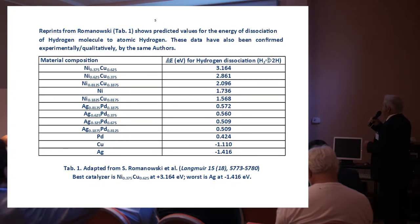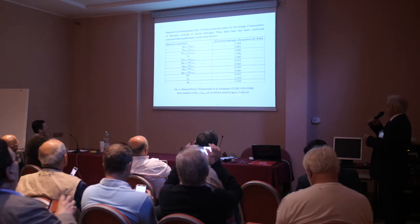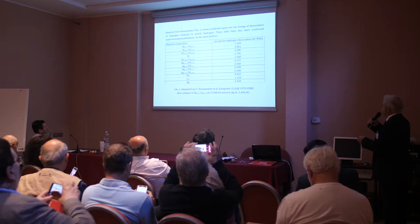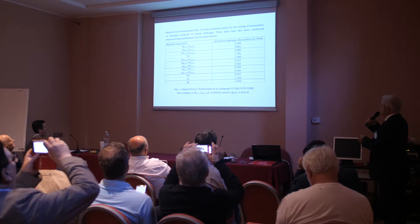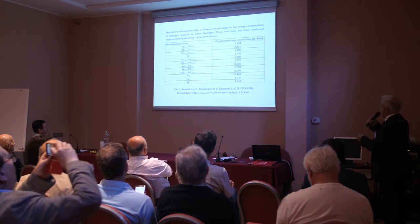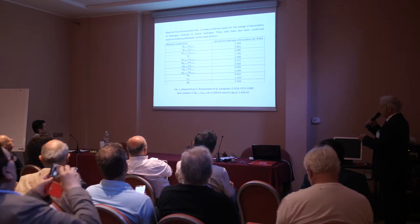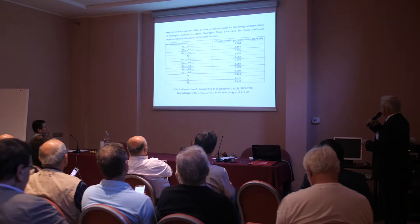Comparing dissociation values: palladium is 0.4 electron volts, nickel is 1.6, and Constantan is in the range of 2 to 3 electron volts — even varying the composition largely. The value remains extremely large. The best composition is nickel 0306, and we are in the top region. The worst material is silver.